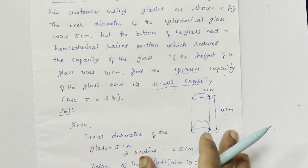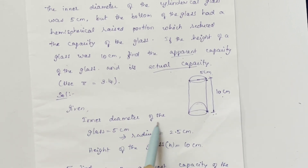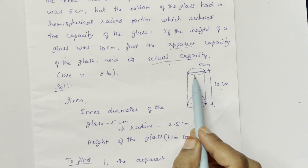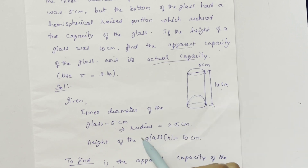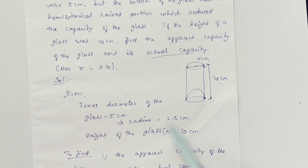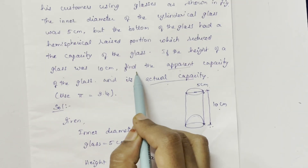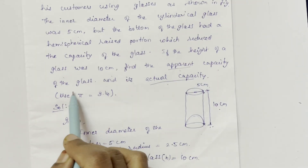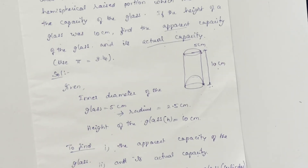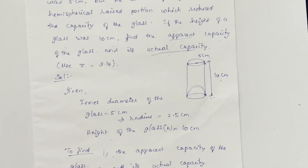The glass is cylindrical in shape. The inner diameter of the glass is 5 cm, so the radius is 2.5 cm. The height of the glass is 10 cm.